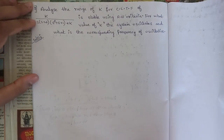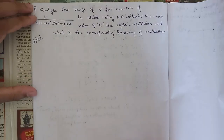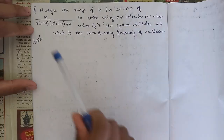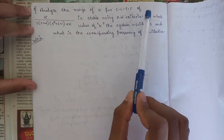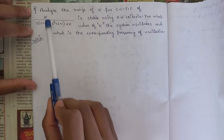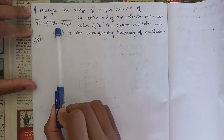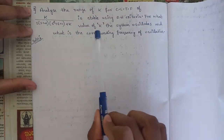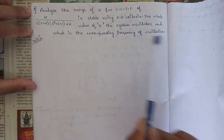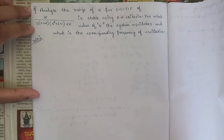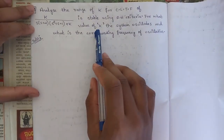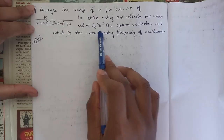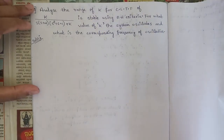Hello everyone, welcome to this new session. In this session we are going to continue with problems only. The next question is: analyze the range of k for a closed-loop transfer function k divided by s(s+2)(s²+s+1)+k for stability using Routh-Hurwitz criteria. Also find the value of k at which the system oscillates and the corresponding frequency of oscillation.